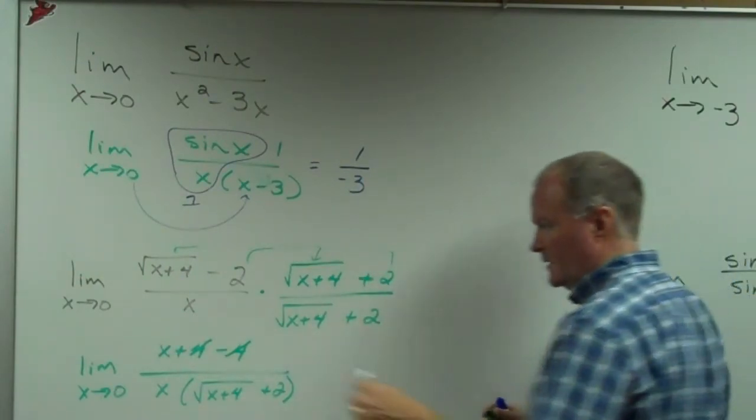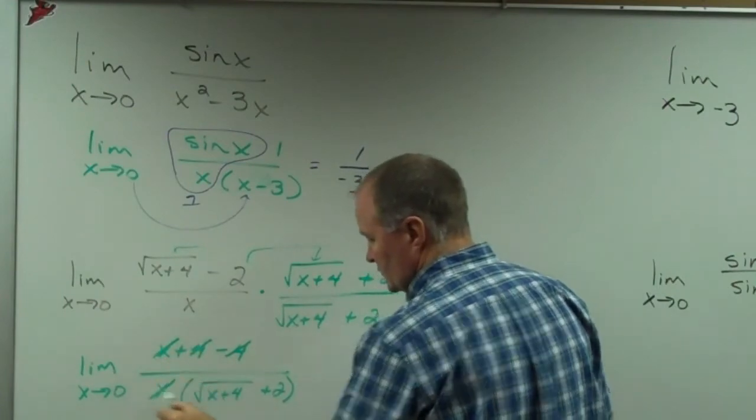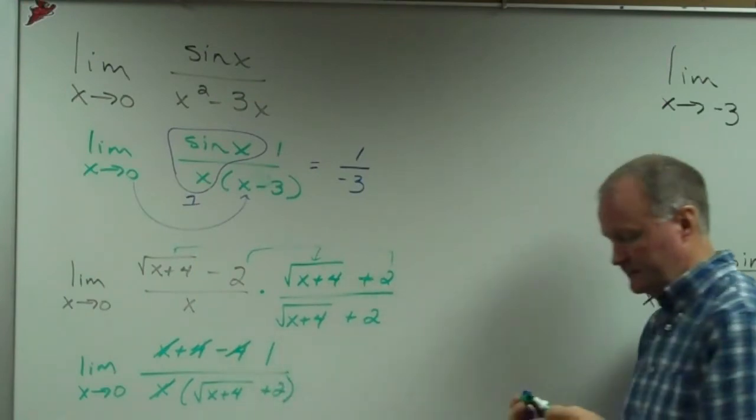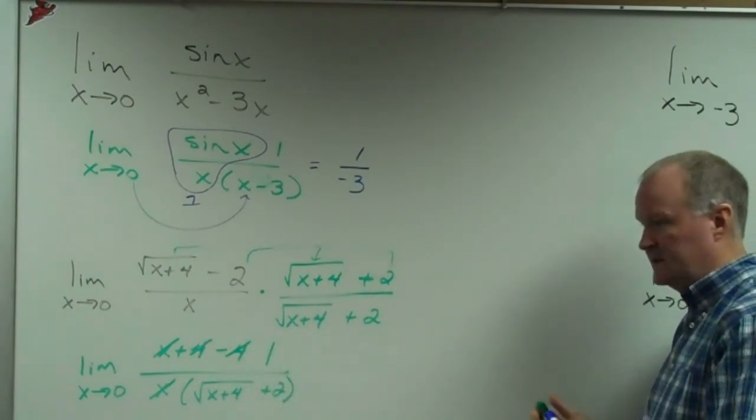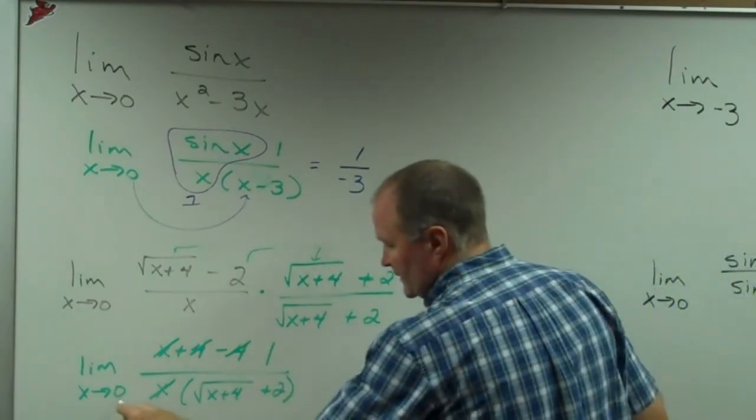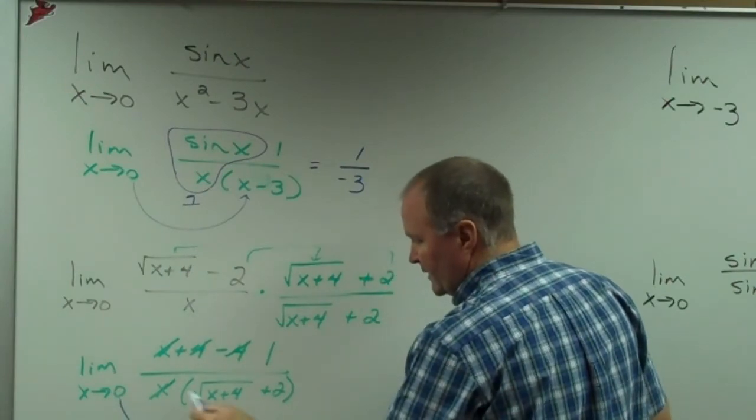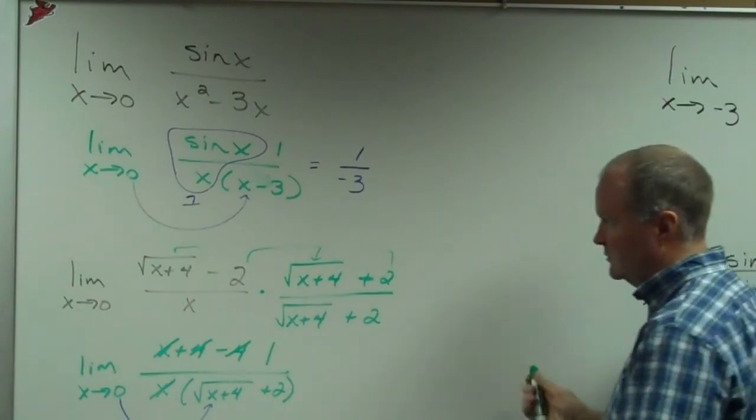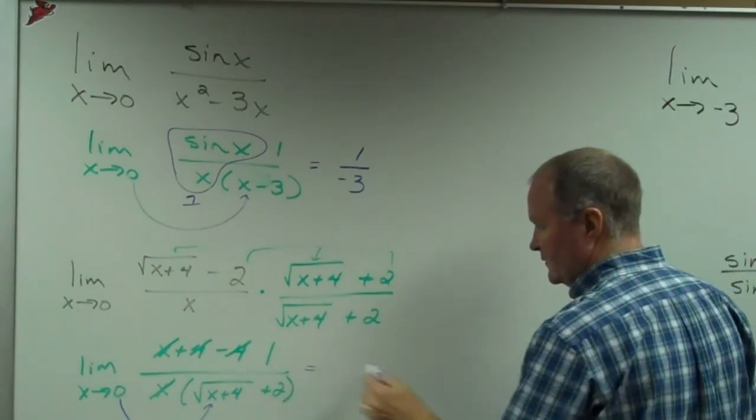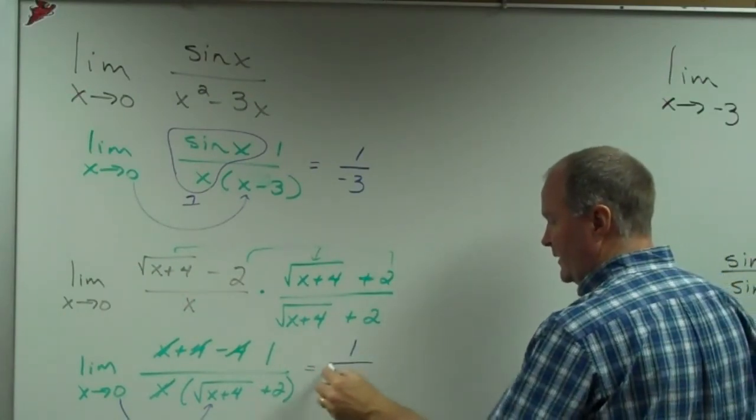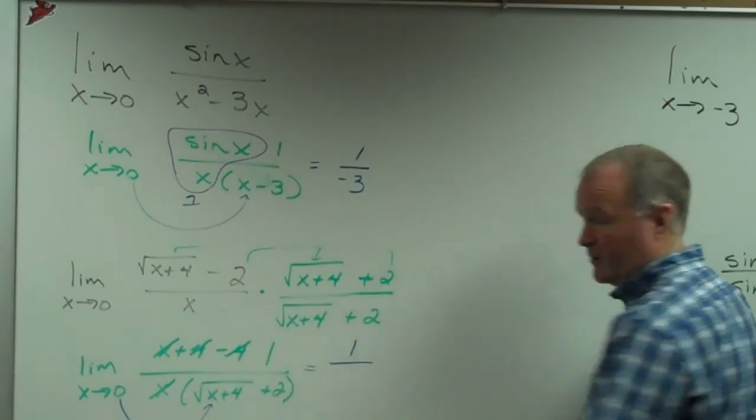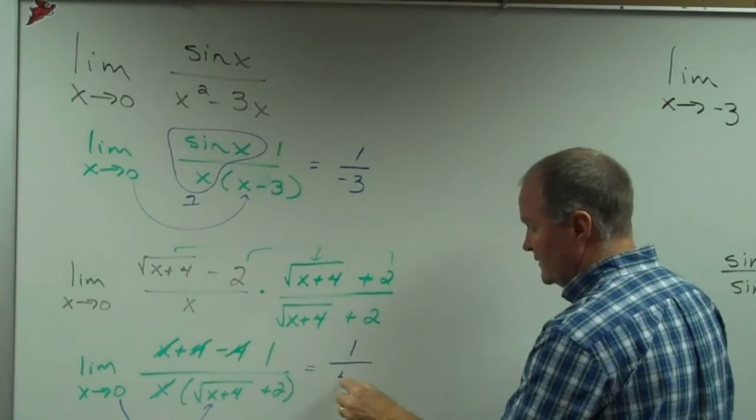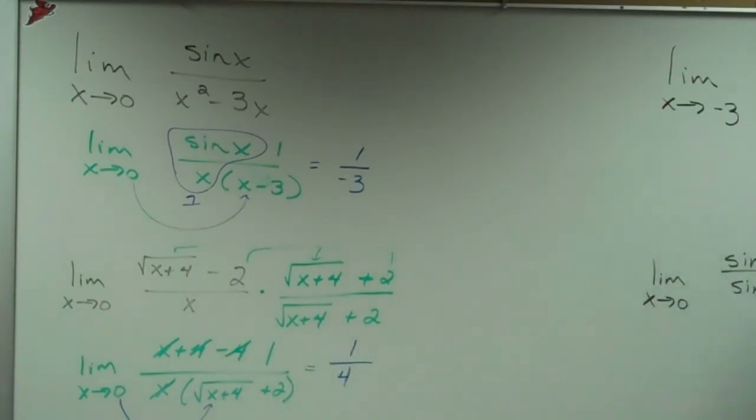And now I just got a 1 up top. As everything else has gone bye-bye. I got rid of my problem child, which was that x right there. If I plug in 0, I now have 1 on top and the square root of 4, which is 2. And 2 plus 2 is 4. So I got 1 fourth.